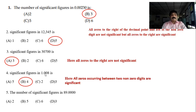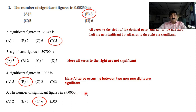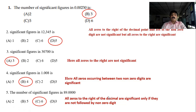Next: the number of significant figures in 89.0000. The rule is: all zeros to the right of the decimal point are significant only if they are not followed by non-zero digits. So for 89.0000, those trailing zeros after the decimal are significant. Non-zero digits define the rule.